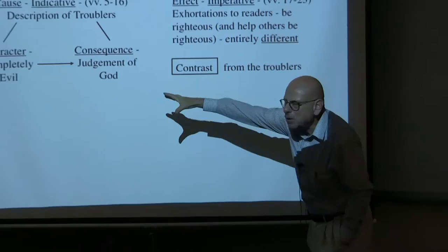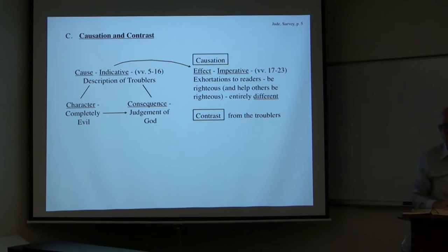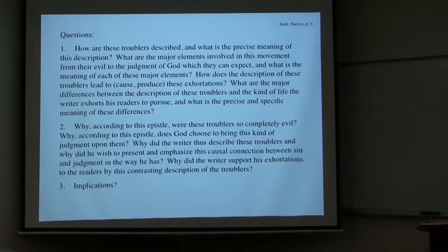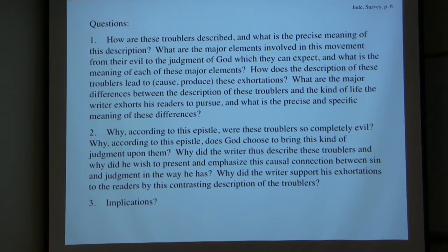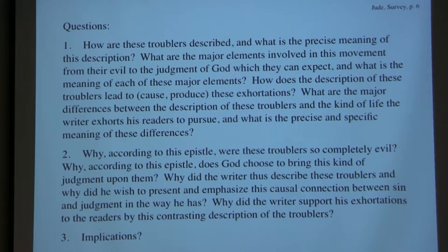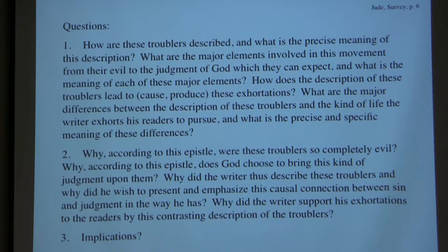Hence you have both causation and contrast. We raise questions with regard to this. Beginning with the definitive questions: how are these troublers described, and what is the precise meaning of this description? What are the major elements involved in this movement from their evil to the judgment of God which they can expect, and what is the meaning of each of these major elements? How does the description of these troublers lead to, cause, or produce these exhortations? What are the major differences between the description of these troublers and the kind of life the writer exhorts his readers to pursue?